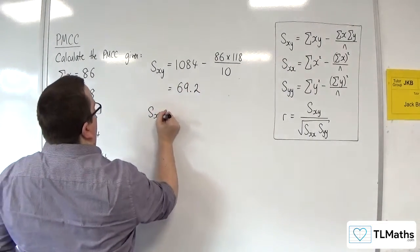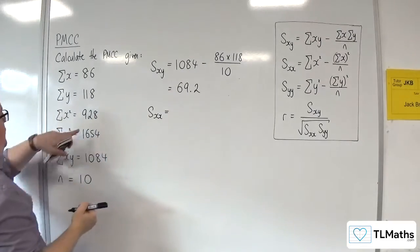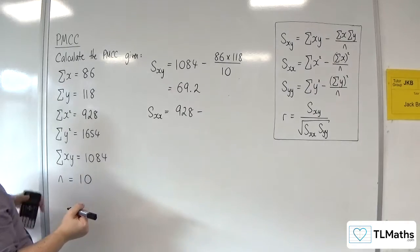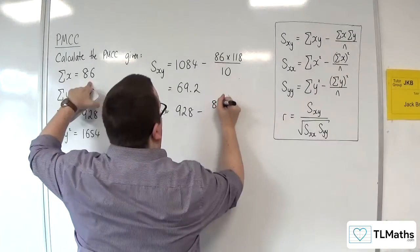Then we've got Sxx, which is the sum of x squared, 928, take away the sum of x, 86, squared, divided by n.